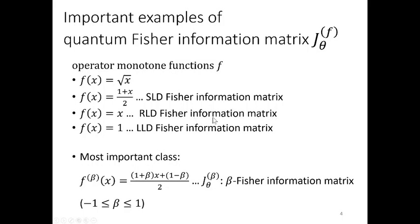In our theory, this type of operator monotone function parameterized by β between minus 1 and plus 1 is most important for our theory. And we call this Fisher information matrix beta Fisher information matrix.